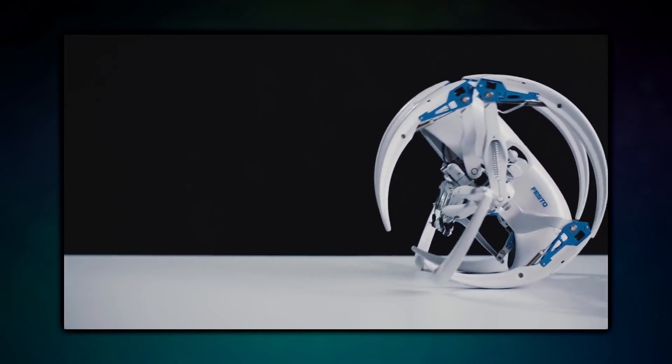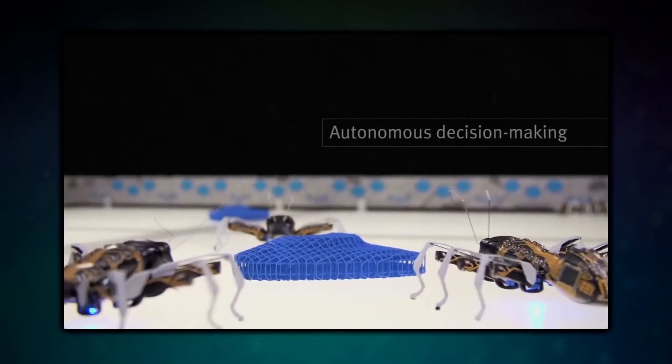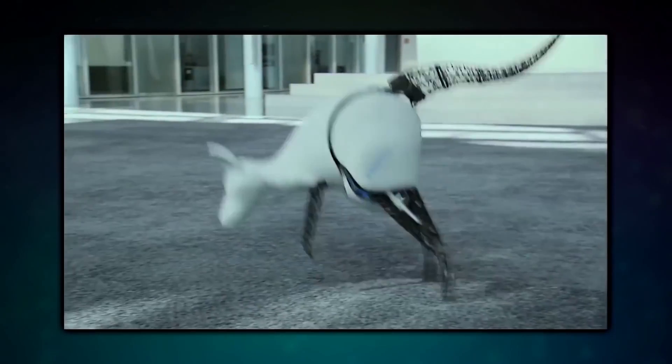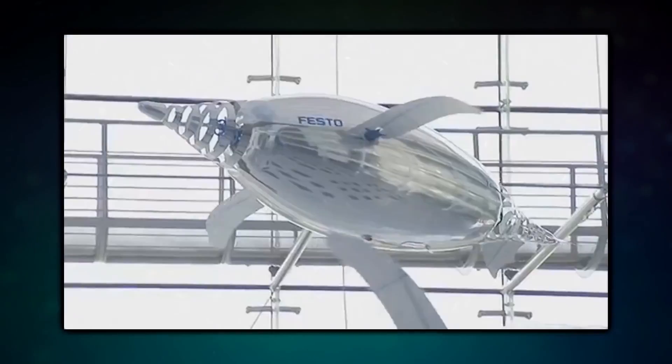Some of Festo's earlier projects included robotic ants, a robot kangaroo, jellyfish, a dragonfly, and penguins.